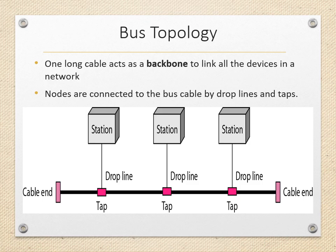Next is bus topology. It is a multipoint connection where one long cable acts as a backbone to link all the devices in a network. Nodes are connected to the bus cable by drop lines and taps. A drop line is the connection between the cable and the device; a tap is a connector that can be a splicer or puncture to the cable. As the signal travels along the backbone, some energy is transformed into heat and becomes weaker over distance. There is a limit on the number of taps a bus can support and on the distance between those taps.